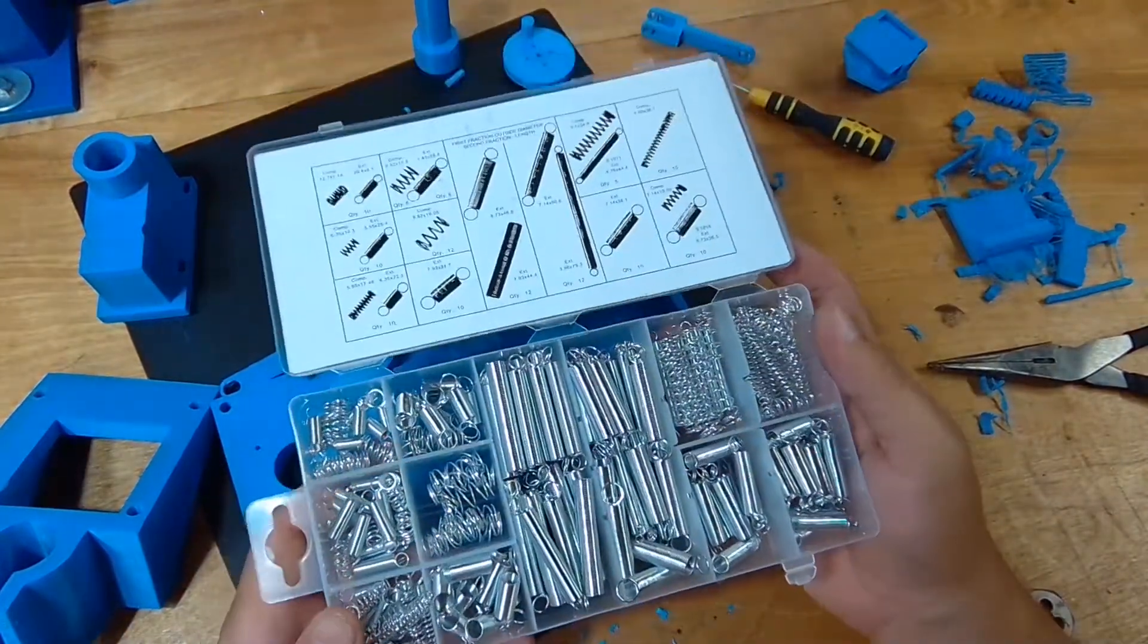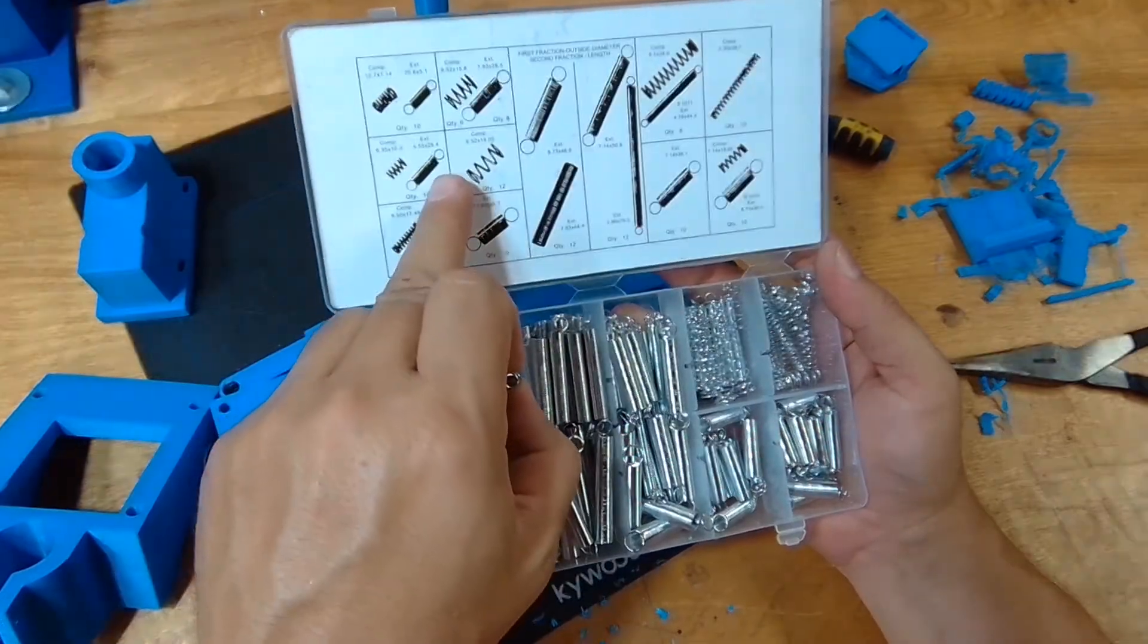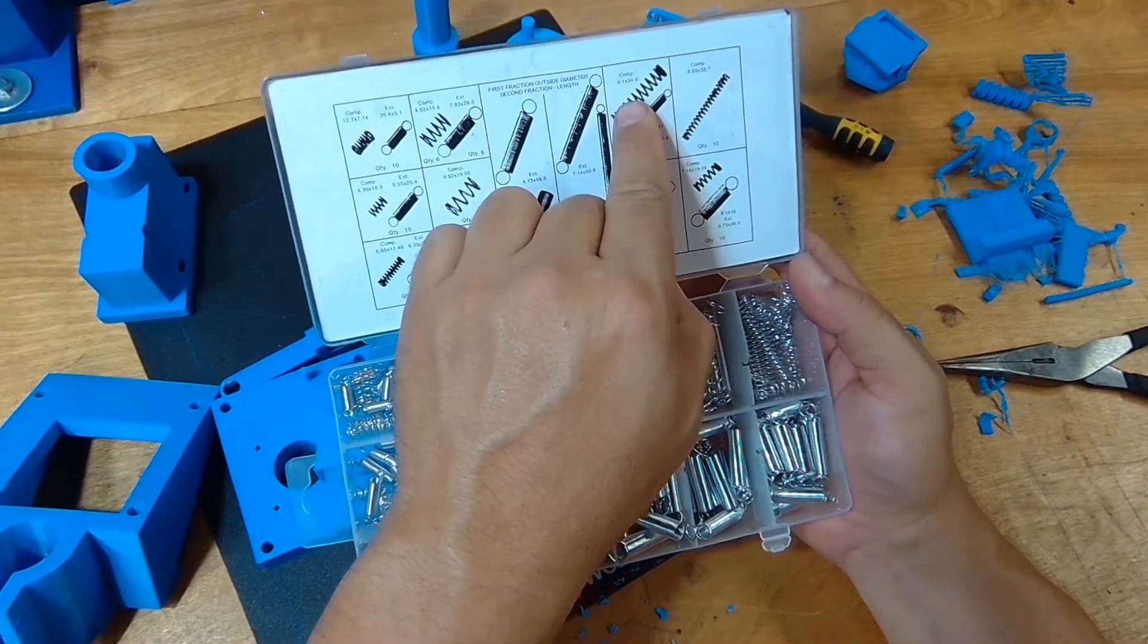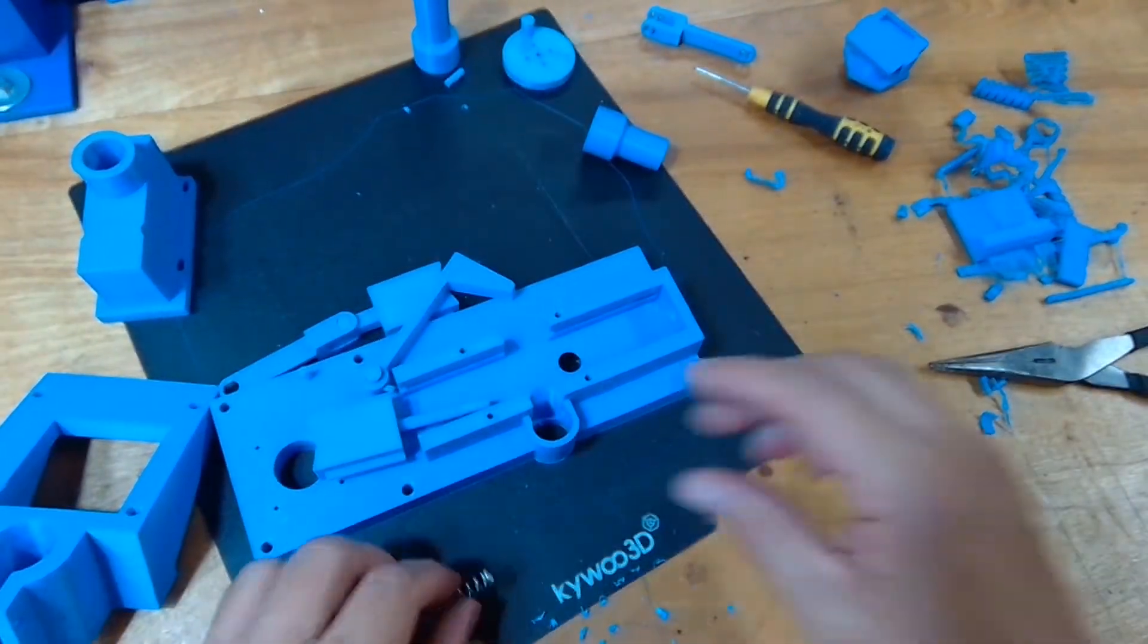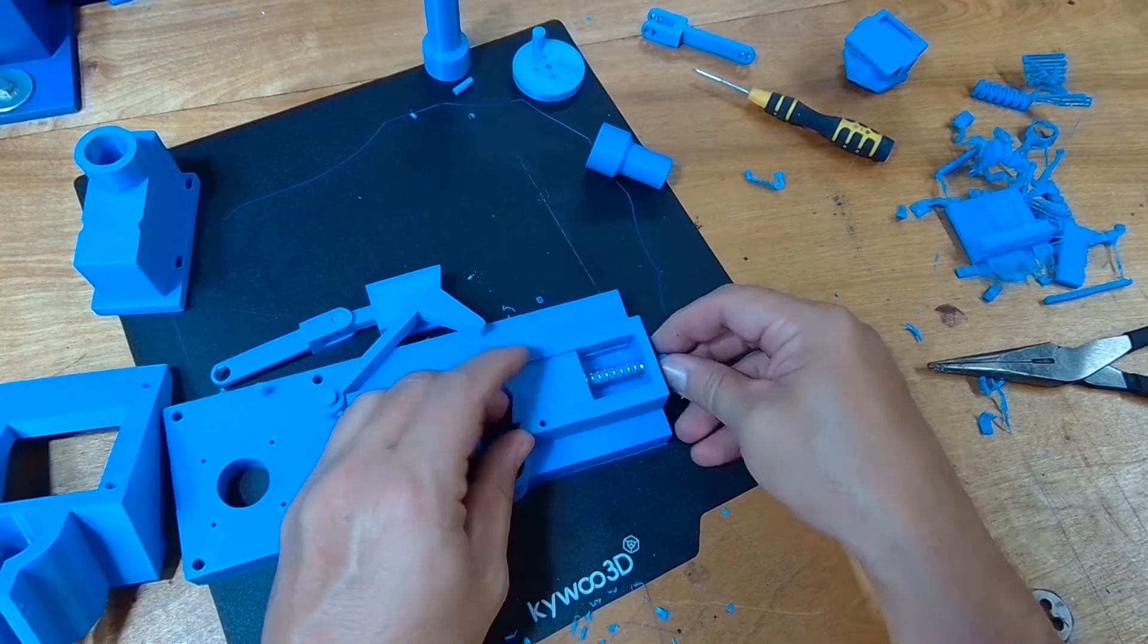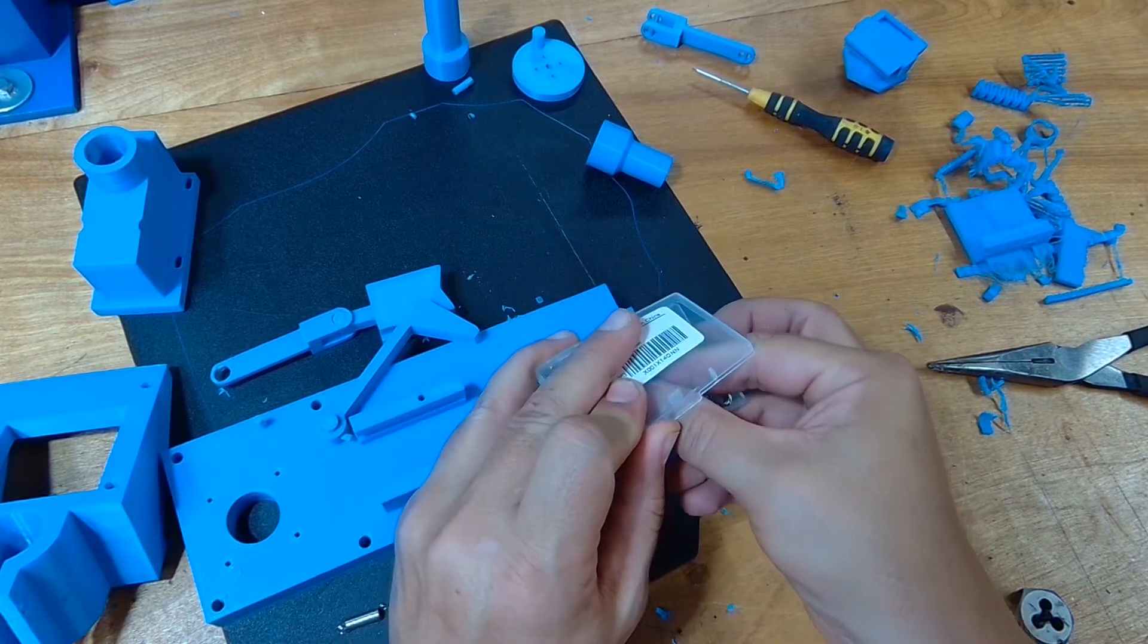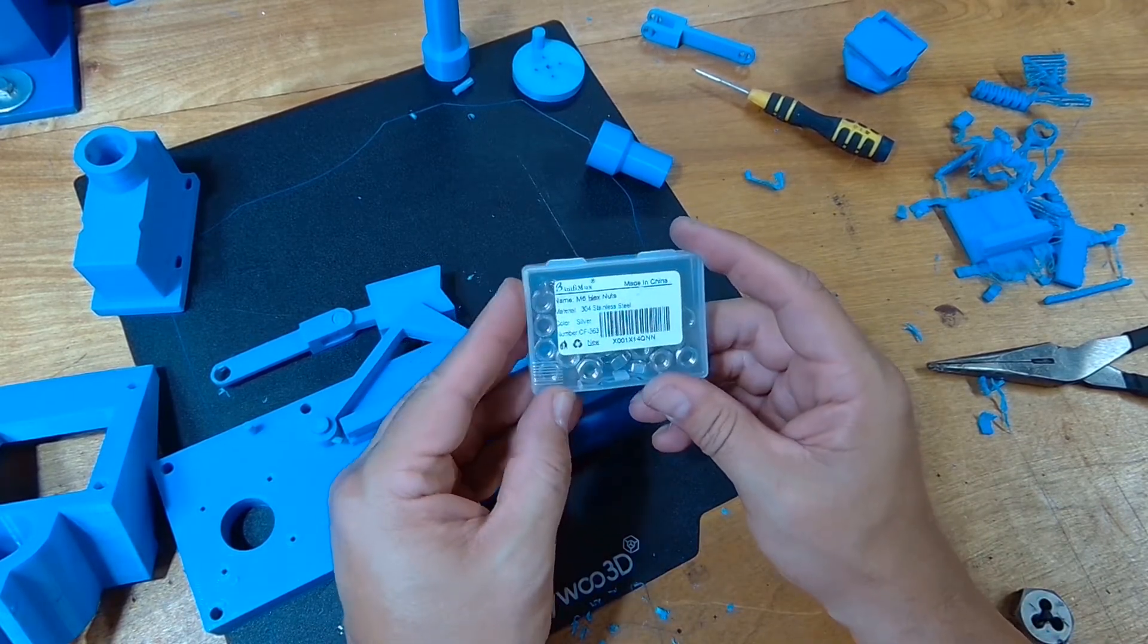So from the beauty of Amazon, a spring kit like this can be attained for about, I don't know, 10-15 bucks. I'm going to use one of these which is 5.55 by 25 and one of these guys which is 9.1 by 34.9. Put that on there, slide it through, and then I have a little box of nuts—these are M6 hex. I just need two of those. Again, Amazon is your friend here or eBay. Any kind of M6 nut would work.